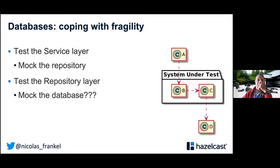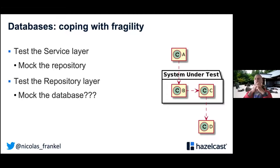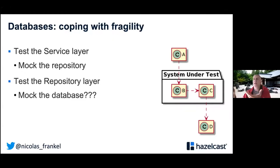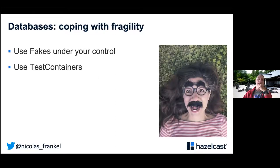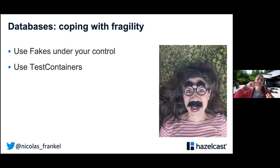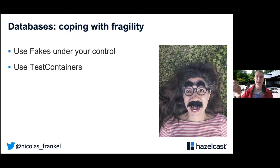Regarding databases or data stores: testing the service layer is easy because you can mock the repository. But if you want to test the repository layer, mocking the database is pointless — you'd just be asserting what you told the mock to return. So use fakes — they behave like a real dependency but are not production-ready. They don't provide clustering or whatever, they just do the job. Or if you're already in the Docker world, there's a nice project called Testcontainers that allows you to create those dependencies on the fly during your tests.